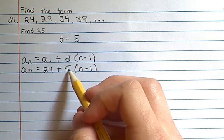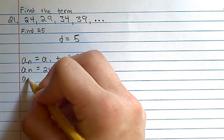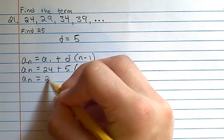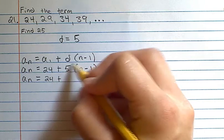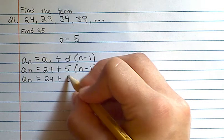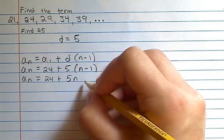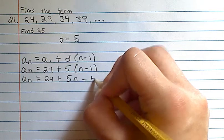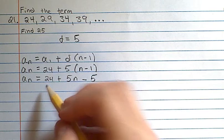And now we can change this to 24 plus 5 times n is 5n, 5 times negative 1 is minus 5. We add these together,